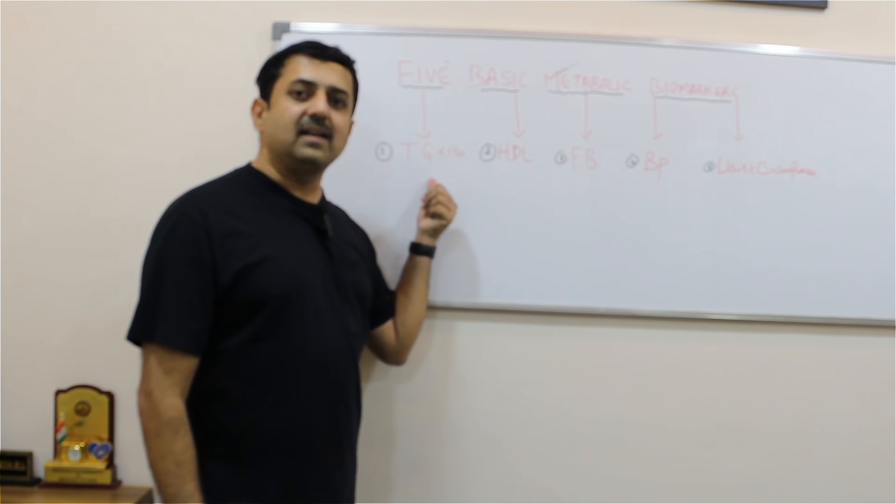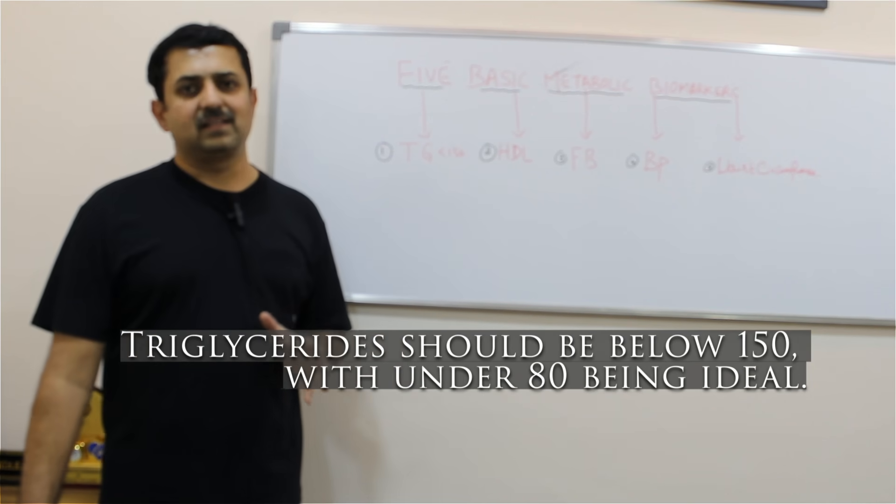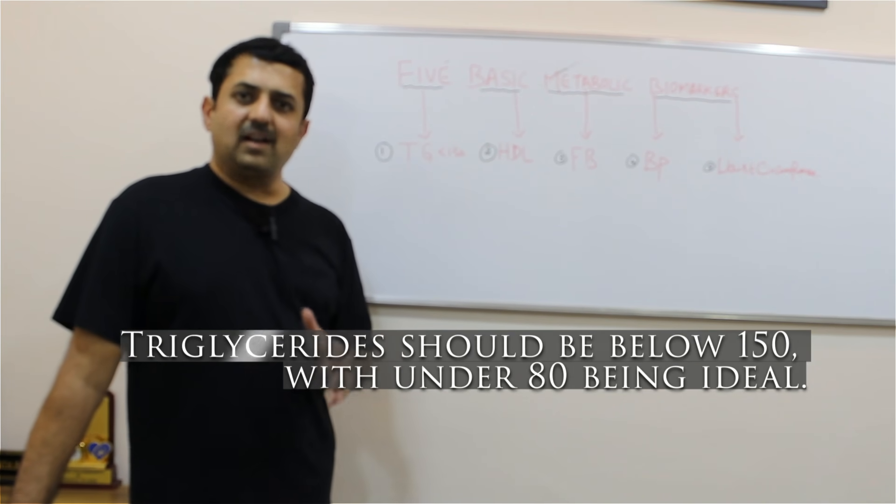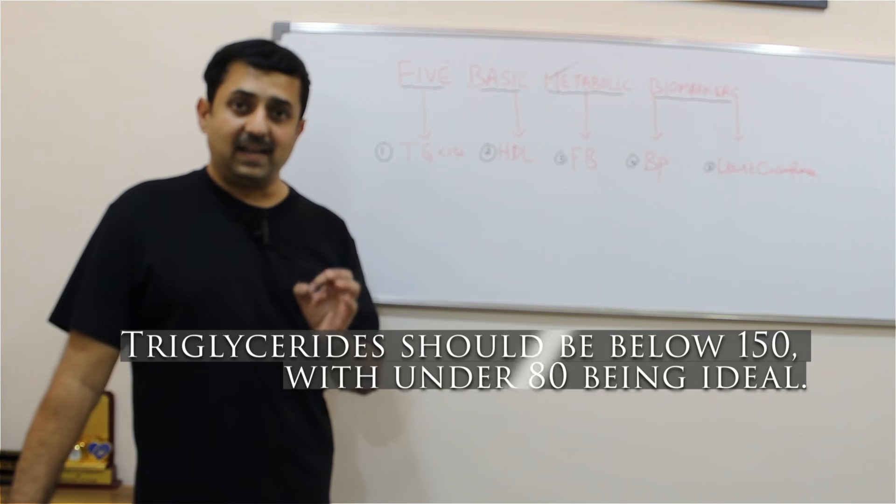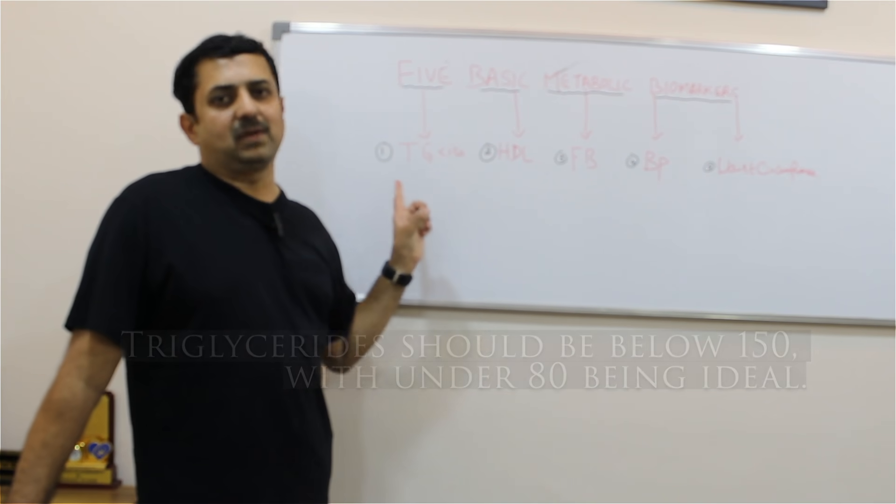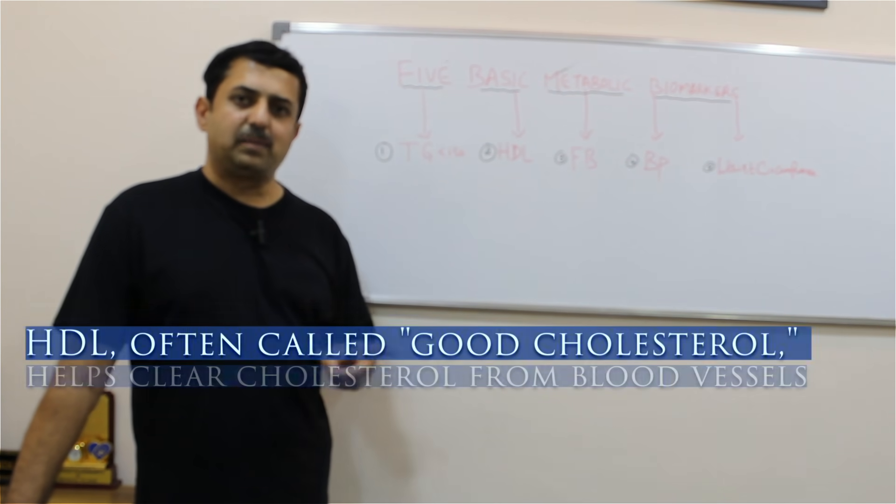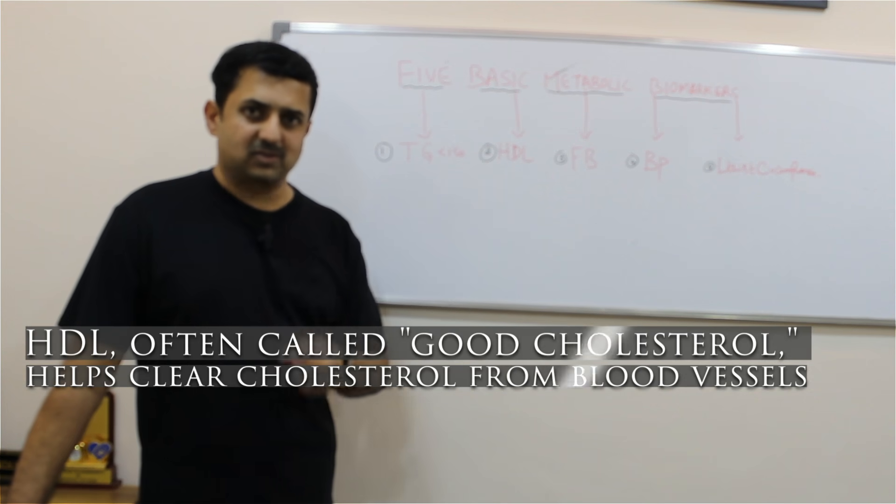If your triglycerides are less than 150, that's good, but still optimum is less than 80. This is one of the good metabolic biomarkers. Second comes HDL, popularly called good cholesterol.